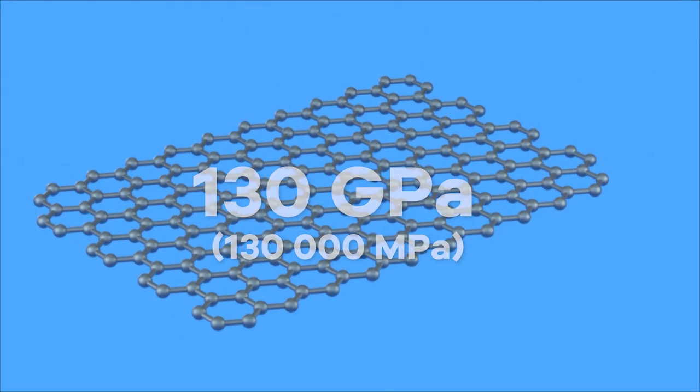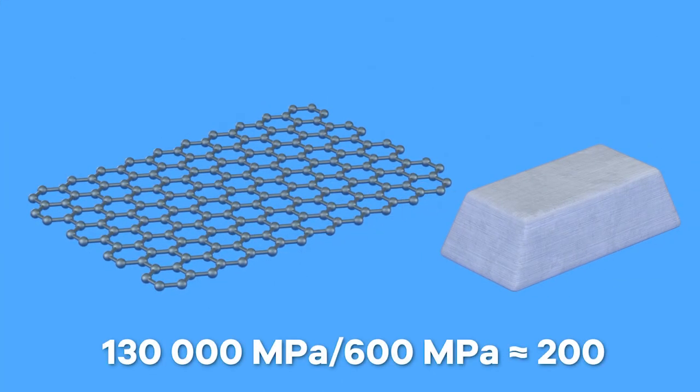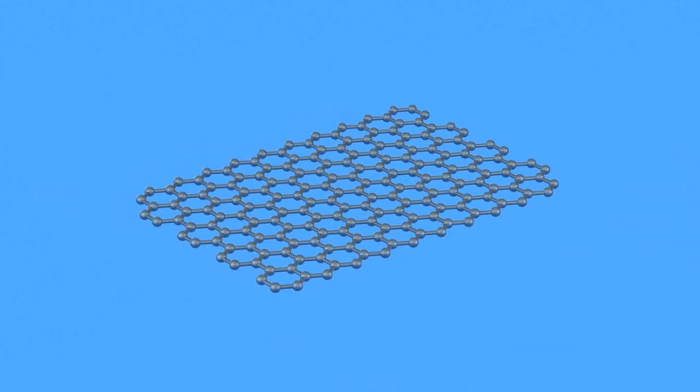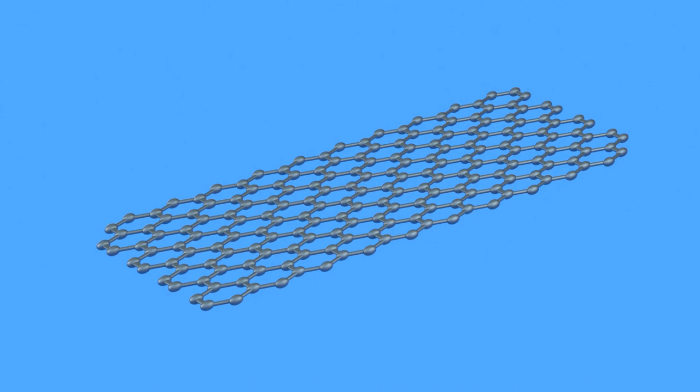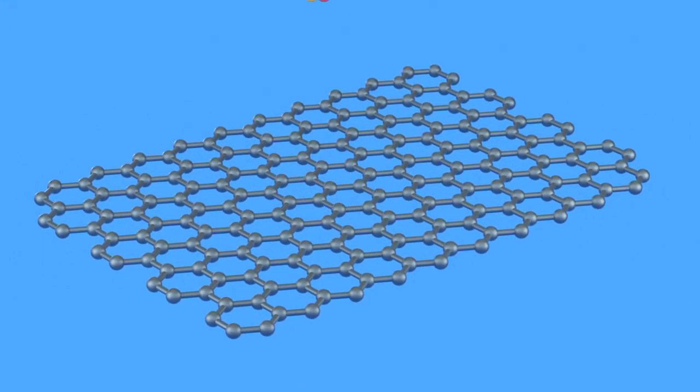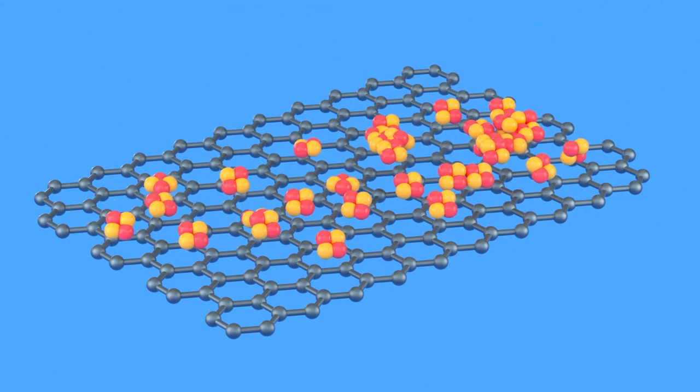It has a tensile strength of 130 gigapascals and is about 200 times stronger than structural steel with a tensile strength of roughly 600 megapascals. Graphene is also extremely flexible and can stretch up to 20% of its initial size without breaking. Even helium atoms cannot pass through a layer of graphene, making it highly impermeable to most gases and liquids.